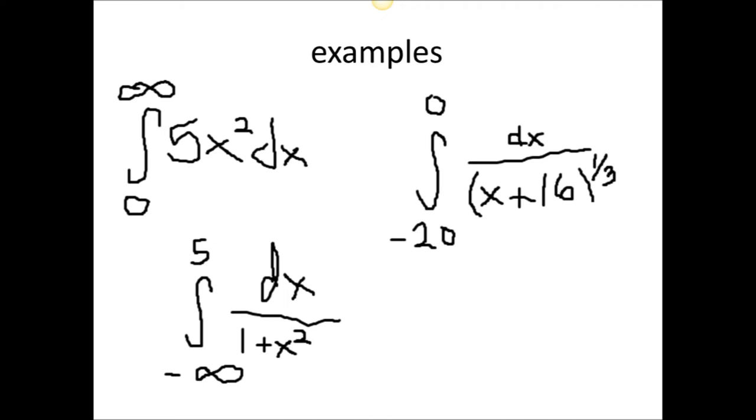For 1 over the quantity x plus 16 to the 1 third power, we will need to set the denominator equal to 0 to see if there are any undefined points on the given interval. We see that negative 16 makes the denominator 0, and therefore the function is undefined at that point.